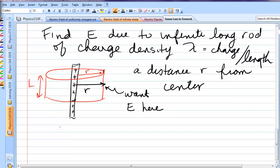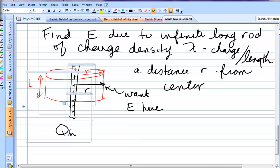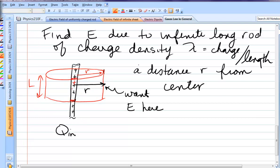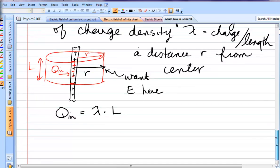Next, Q_in. How much charge is inside that cylinder? This cylinder is chopped this rod so that it doesn't contain all the charge. It only contains this amount of charge from here to here. This bit. That's Q_in. And that Q_in will be the linear charge density times the length of my Gaussian surface. Charge per length times length. That's how much charge is inside that red cylinder.